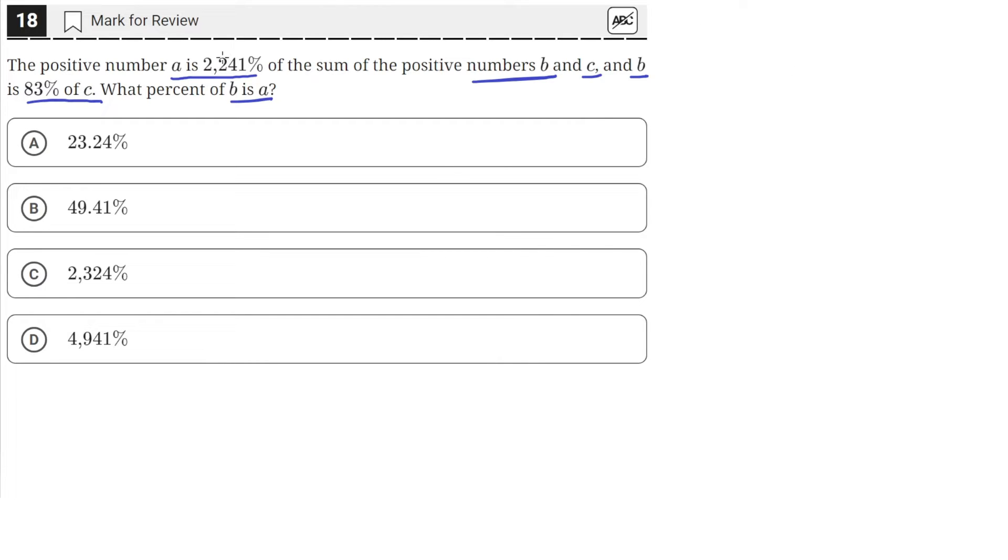So we're given that A is 2,241% of the sum of the positive numbers B and C. So that means A is equal to 2,241 over 100. This just converts the fraction into decimal form, times the sum of B and C.